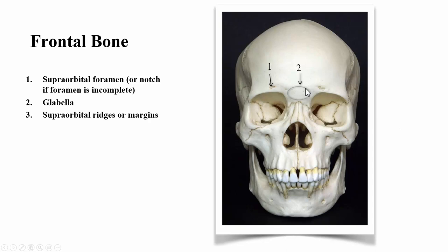In between the eyes there's a lump called the glabella. Then we have the ridges or margins above the orbit — because they're above the orbit, this would be the supraorbital ridge or supraorbital margin. Sometimes there's a little nick or notch in that margin, and that would be the supraorbital notch.